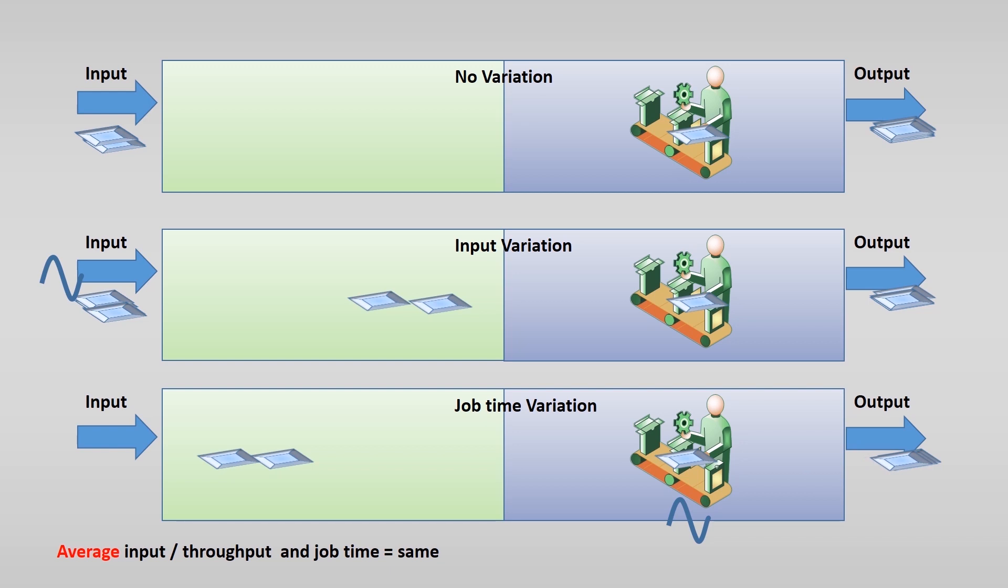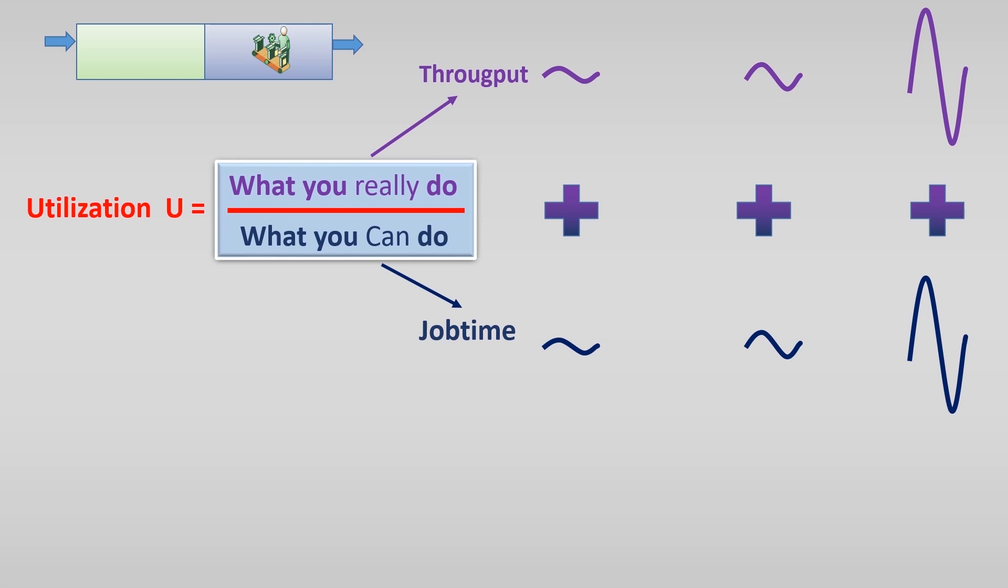The central issue is, you cannot make up for lost time if input and job times vary. The larger the variation in time the input or throughput arrives, and variation in the job time, the longer the waiting times in the queue for individual orders.